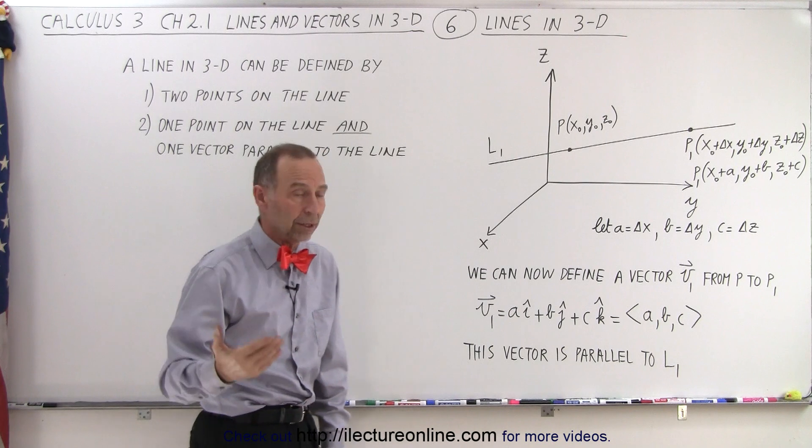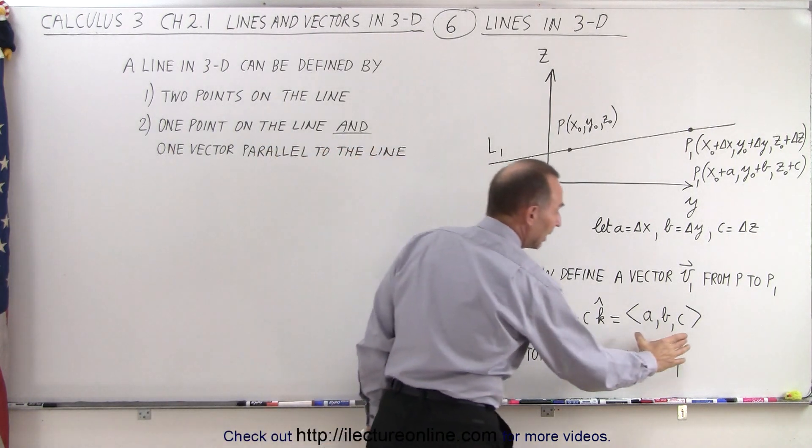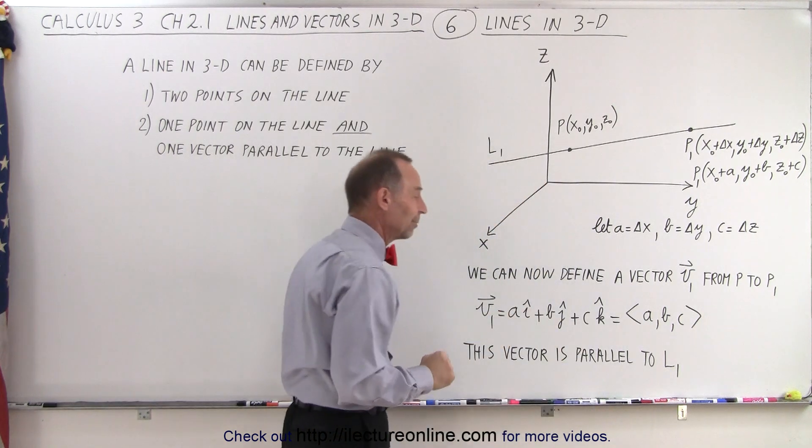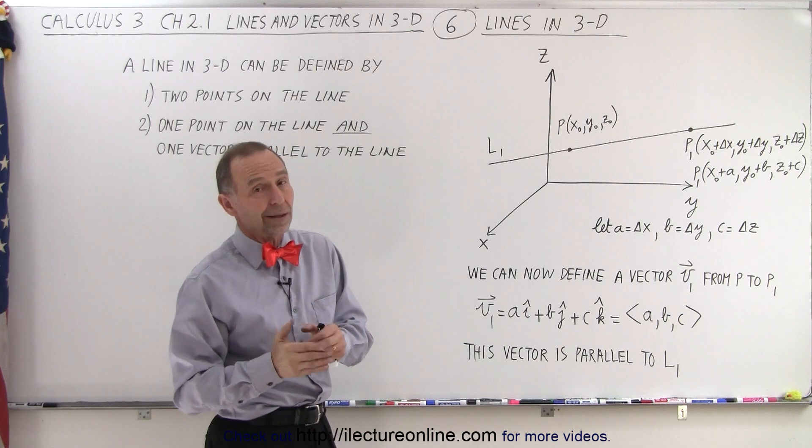And let's call that vector 1 associated with line 1. We can also write it in this form right here. That means the same thing. And what we can now see is that that vector is parallel to the line.